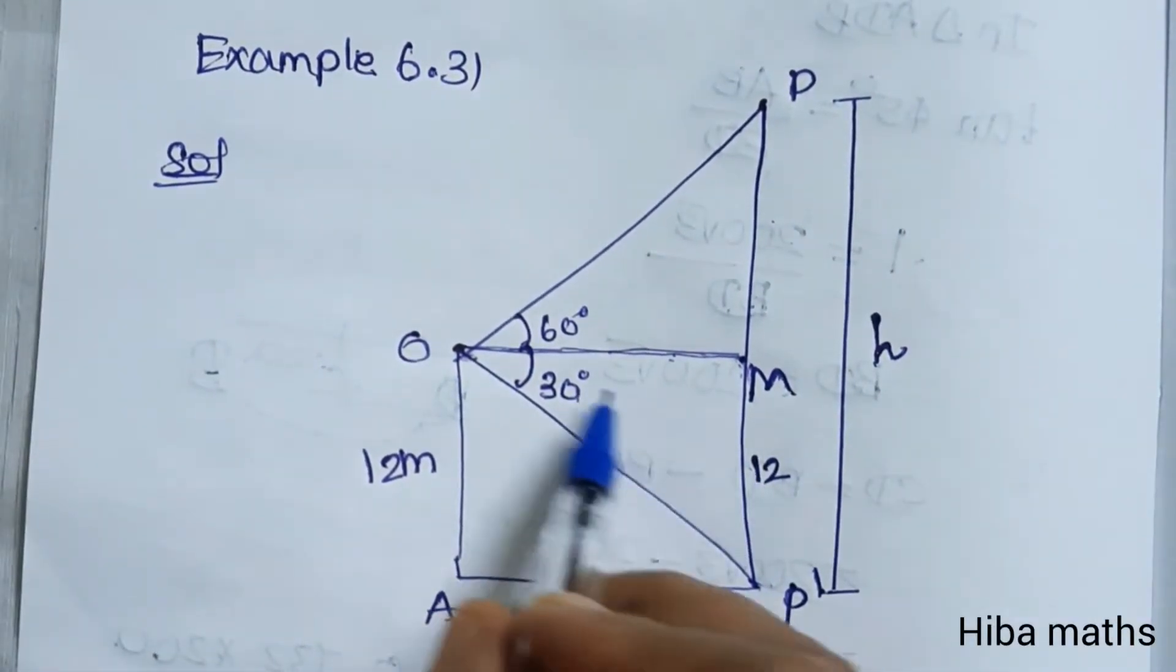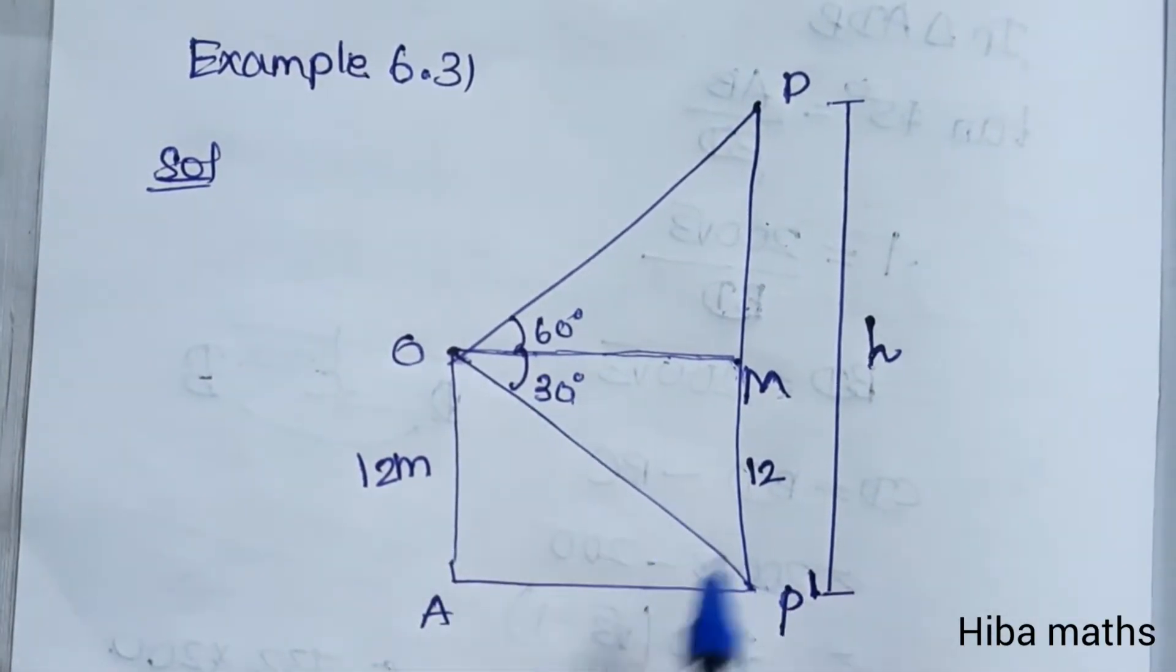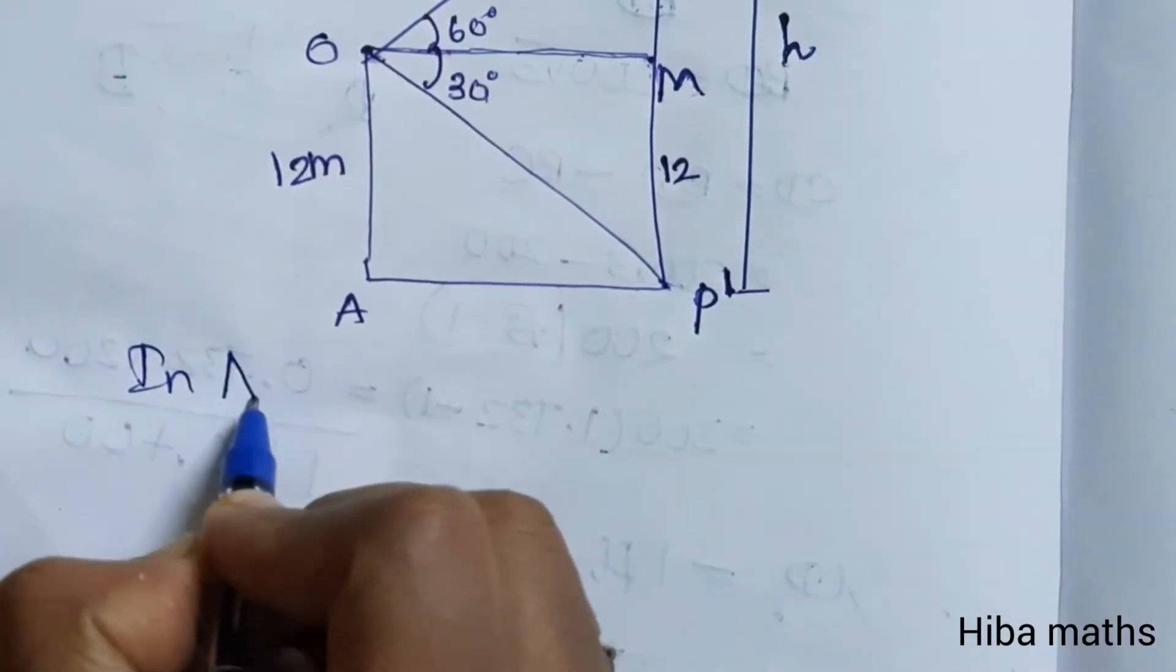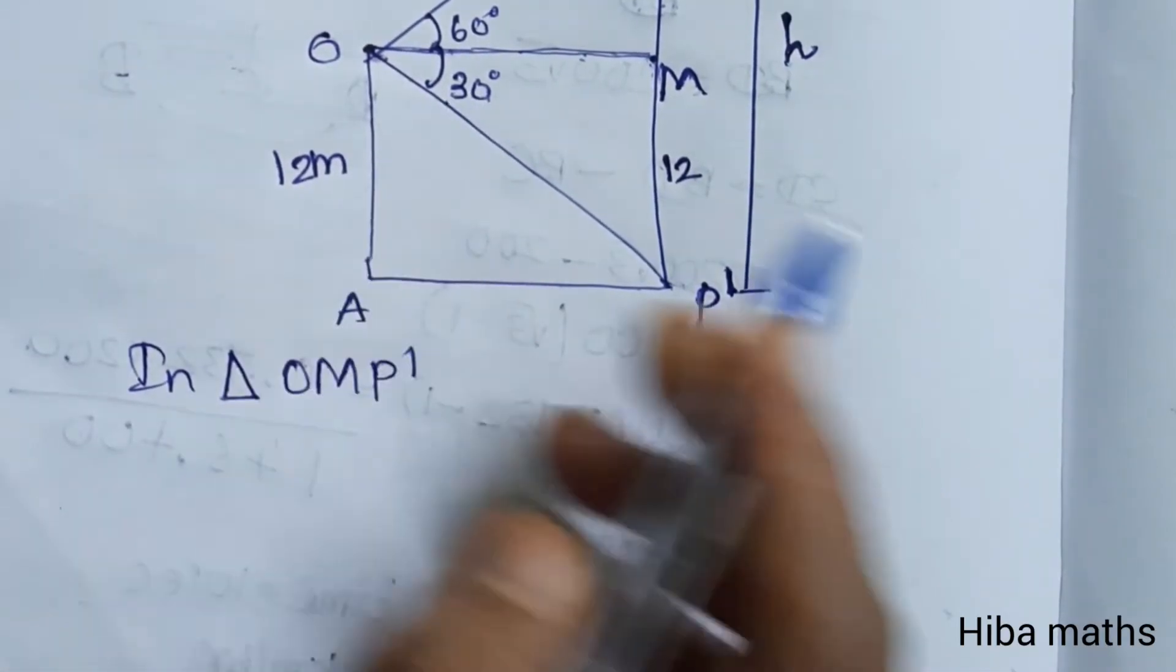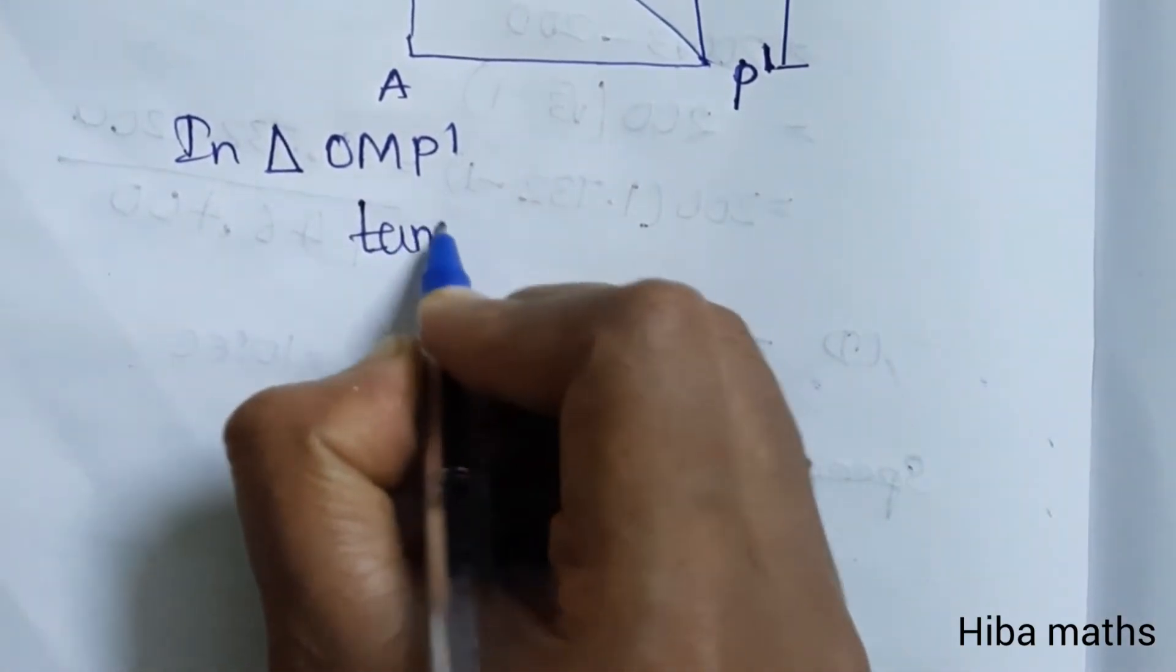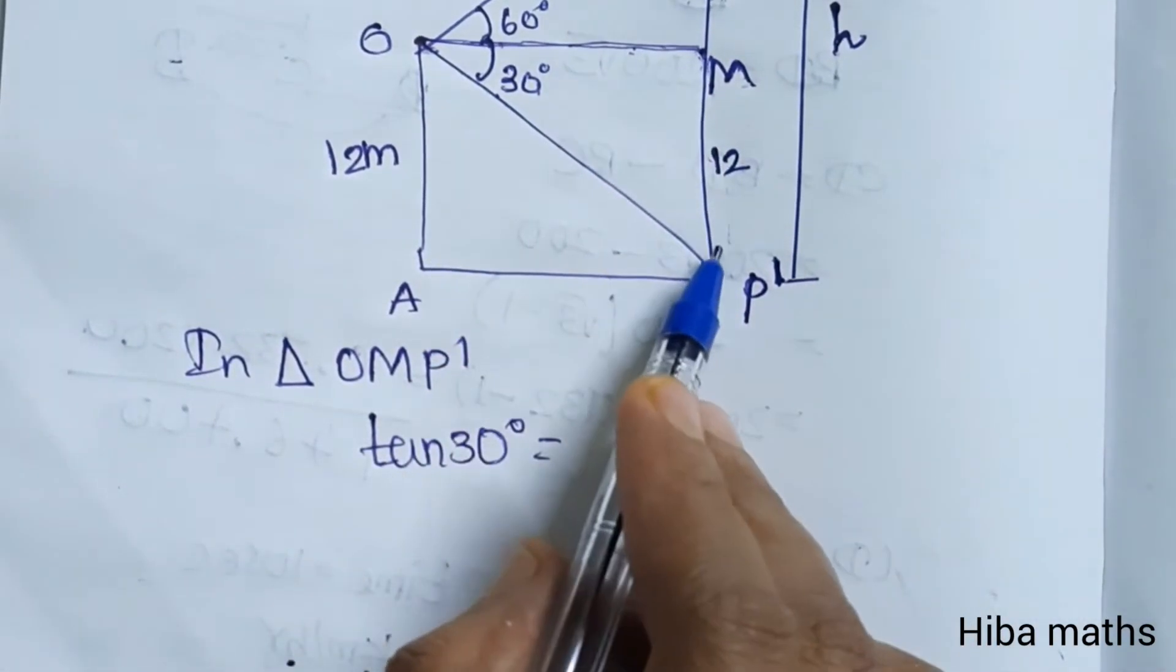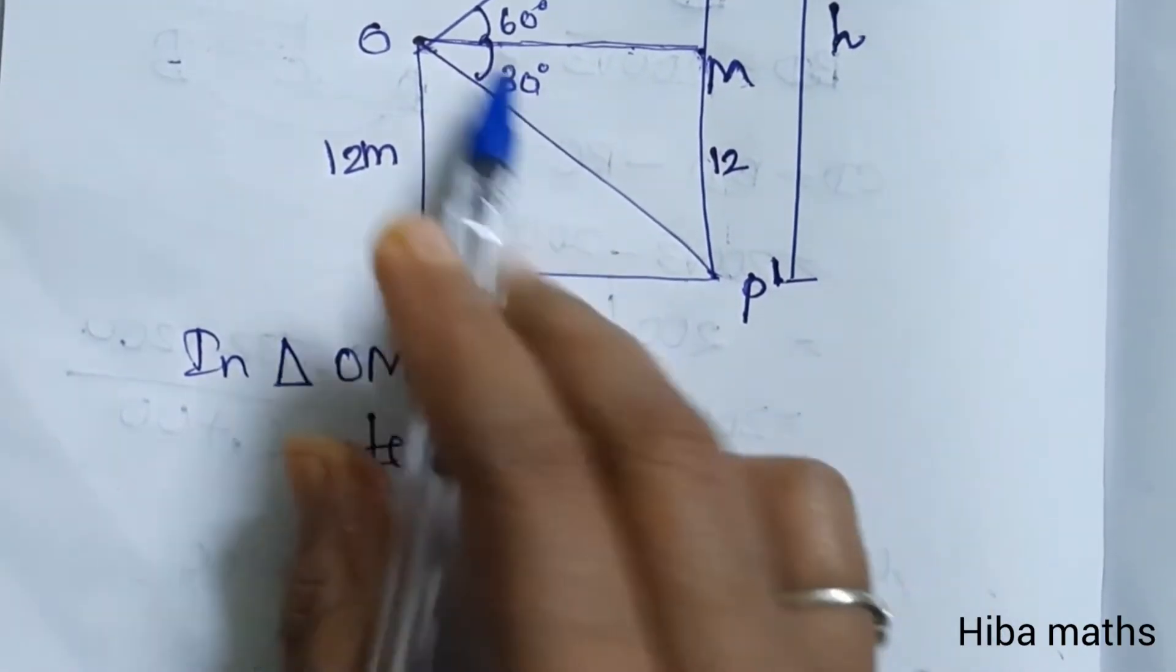First I will take this triangle. In triangle OMP', tan 30 degrees is equal to opposite by adjacent, MP' by OM.